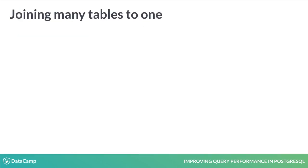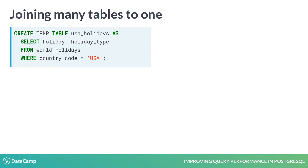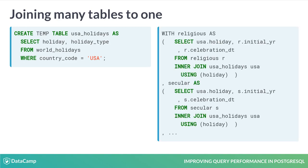Referencing the same table multiple times is inefficient and slow. Instead, you can create a temp table of the common large table — it is stored in memory and available as a faster copy in subsequent CTEs joined to this one table. This example creates the same USA holidays temp table as past slides, then uses this temp version to join to other information, including origin and celebration date information for religious and secular holidays.